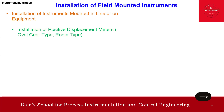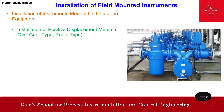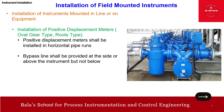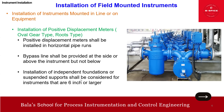Now we'll focus on the positive displacement meter. The positive displacement meter shall be installed in a horizontal pipeline. A bypass line shall be provided at the side or above the instrument — not below. Installation on an independent foundation or suspended support shall be considered for instruments that are 6 inch or larger — for example, you can have a support like this for 6 inch and larger.